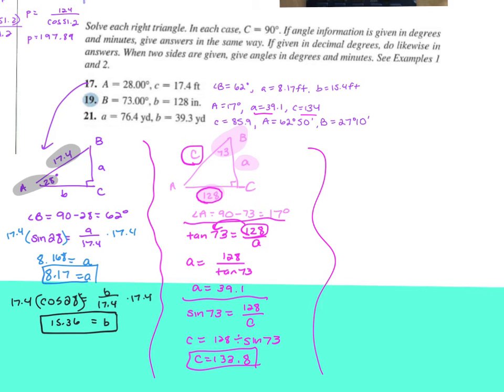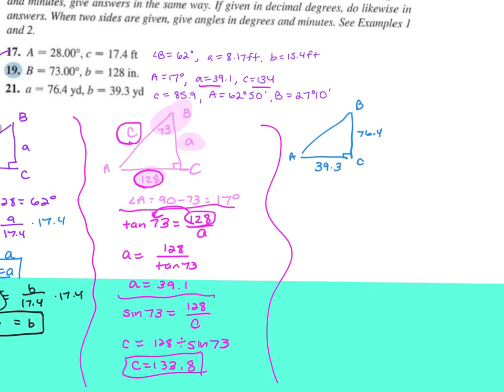Last one here is 21. We want to draw our triangles. C is the right angle, B. This time, we're given both sides, 76.4 and 39.3. I can find the missing side by doing A squared plus B squared equals C squared. 39.3 squared plus 76.4 squared gives me 7,381.45. And that's C squared. I square root both sides. And I get 85.9 for side C.